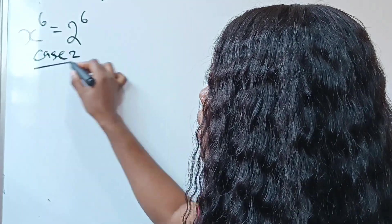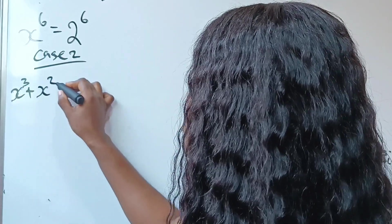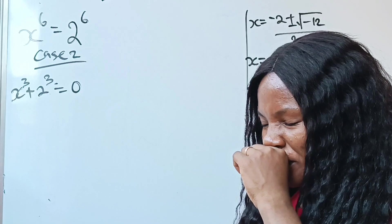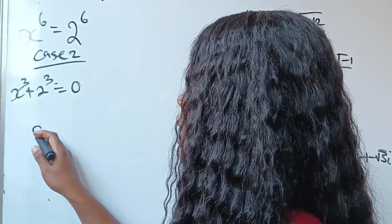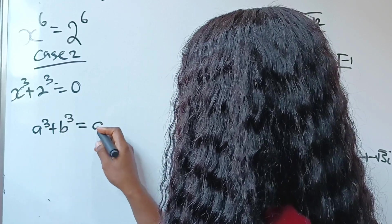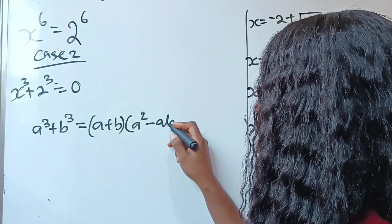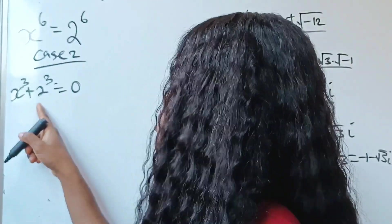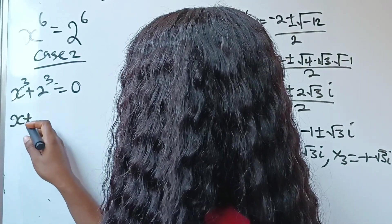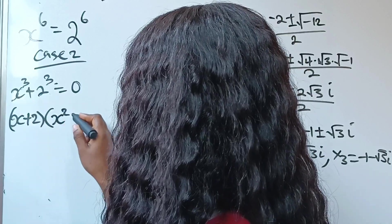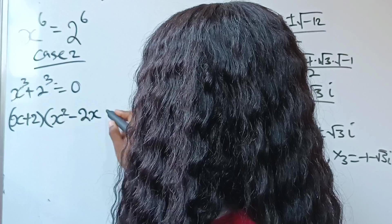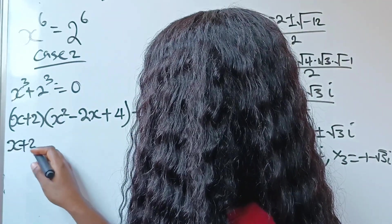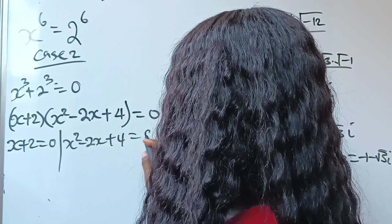In Case 2, we have x to the power of 3 plus 2 to the power of 3 equals 0. We recall the identity: a to the power of 3 plus b to the power of 3 equals a plus b, multiplied by a squared minus ab plus b squared. Expressing this in that form, we get x plus 2, multiplied by x squared minus 2x plus 4, equals 0. Therefore, x plus 2 equals 0, giving x equals minus 2, and x squared minus 2x plus 4 equals 0.